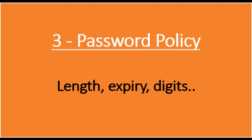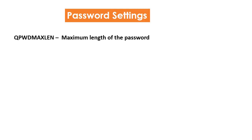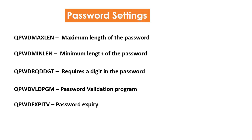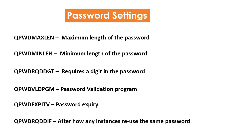Point number 3: Password Settings. The following system values are defined for the password policy: QPWDMAXLEN identifies the maximum length of the password. QPWDMINLEN defines the minimum length of the password. QPWDRQDDGT specifies whether a digit or numeric value is required in the password. QPWDVLDPGM calls a password validation program. QPWDEXPITV defines the password expiry interval, usually 30 or 90 days as per policy. QPWDRQDDIF defines after how many cycles you can repeat the same password. Ensure all the above values are defined as per the password policy for compliance.